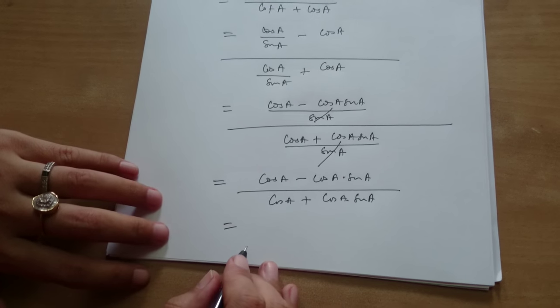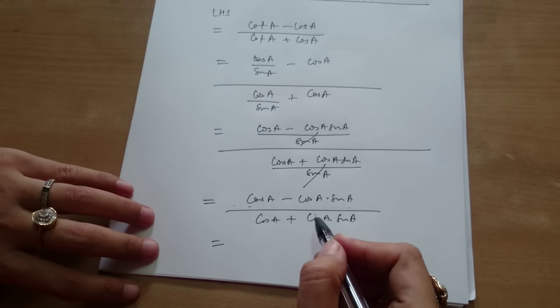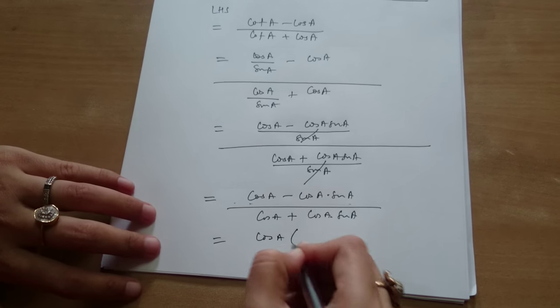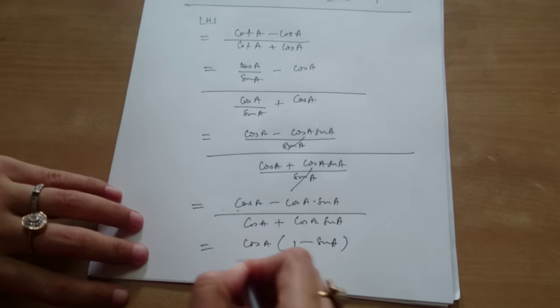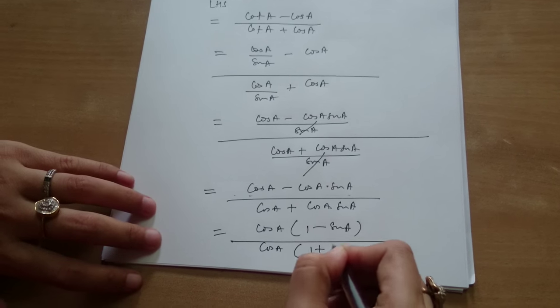What is common in the numerator? In the denominator, is there something common in the denominator? Cos A. Cos A, 1 minus sine A upon cos A, 1 plus sine A.